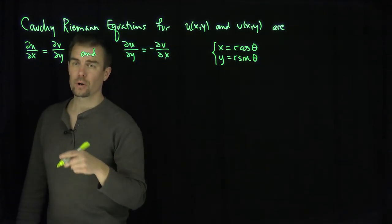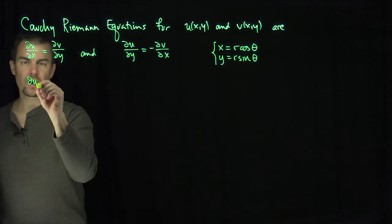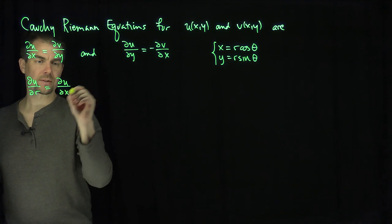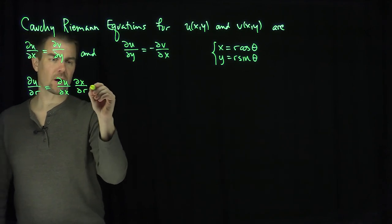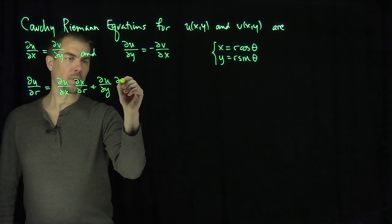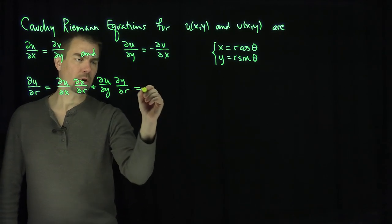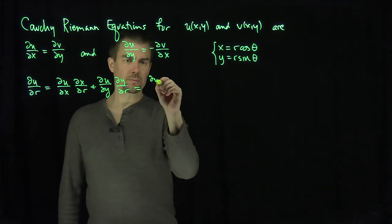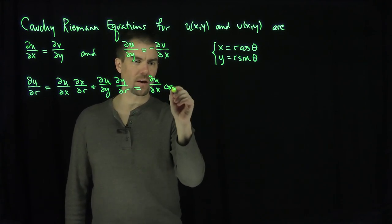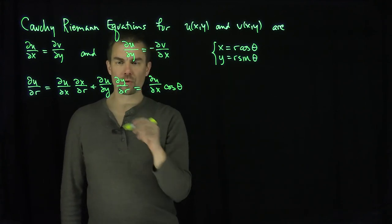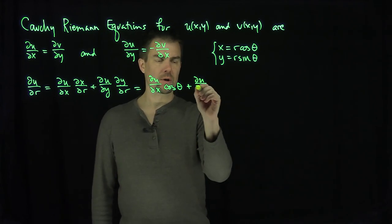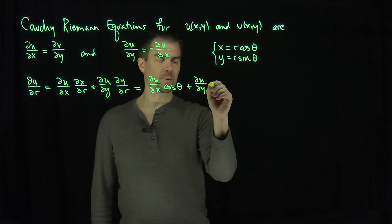Now let's compute partial u partial r. By the chain rule, partial u partial r equals partial u partial x times partial x partial r plus partial u partial y times partial y partial r, which gives partial u partial x times cosine theta plus partial u partial y times sine theta.